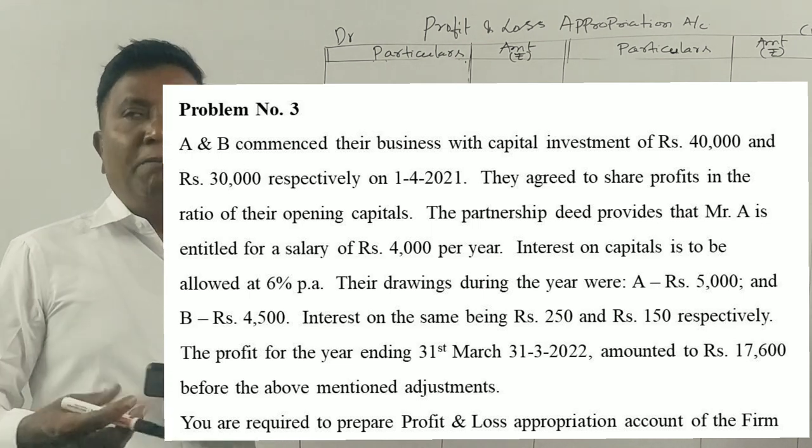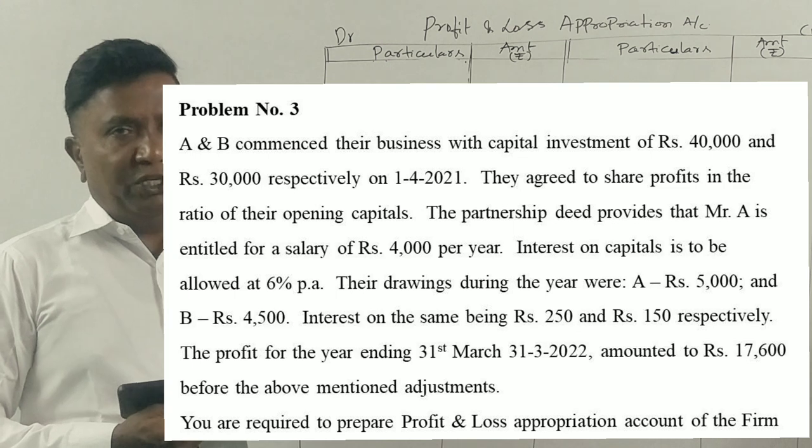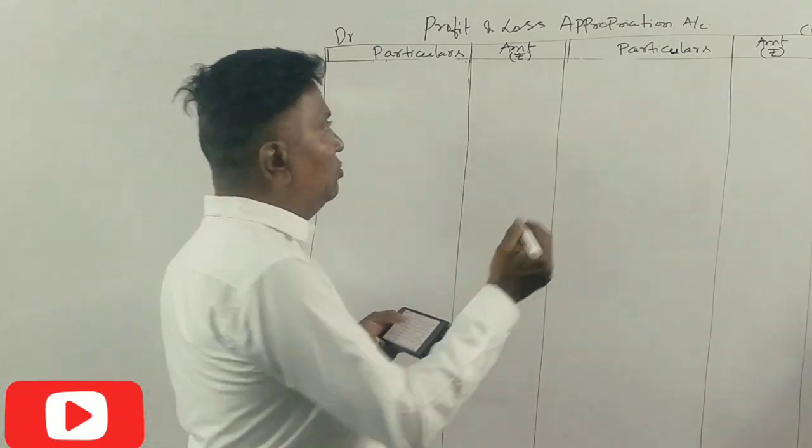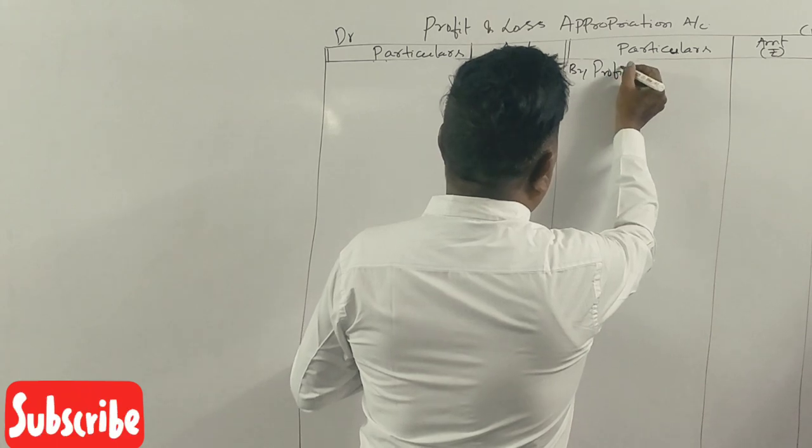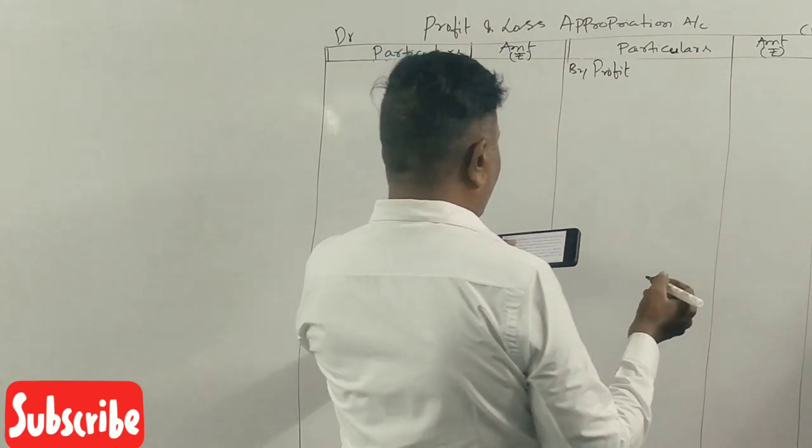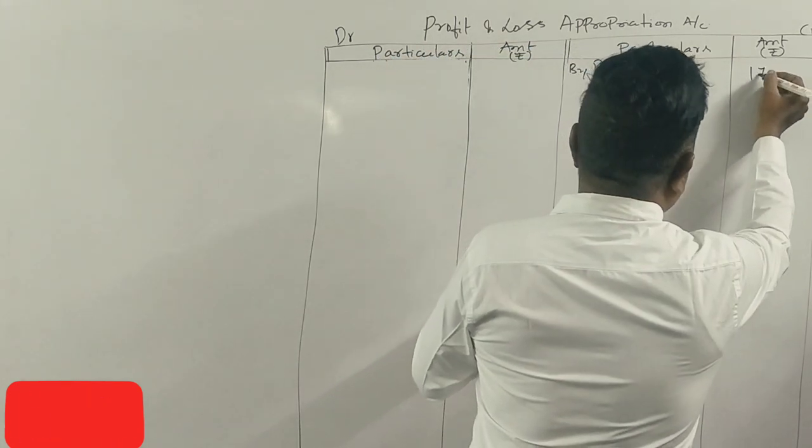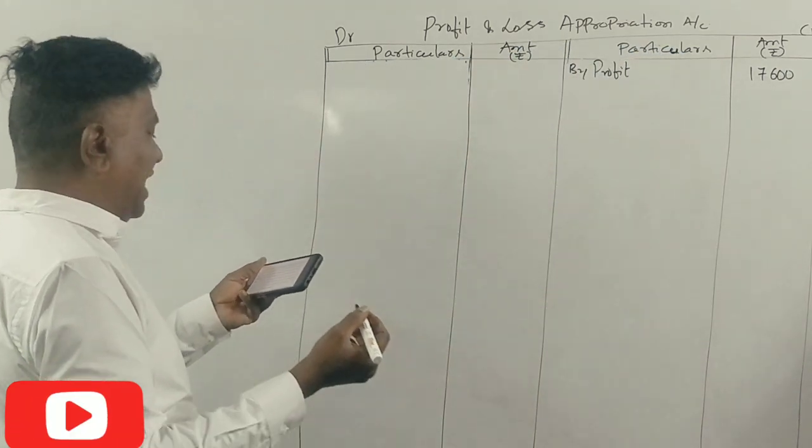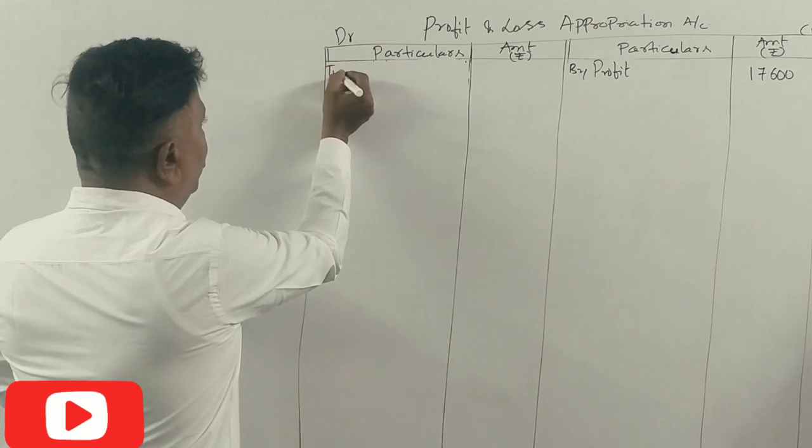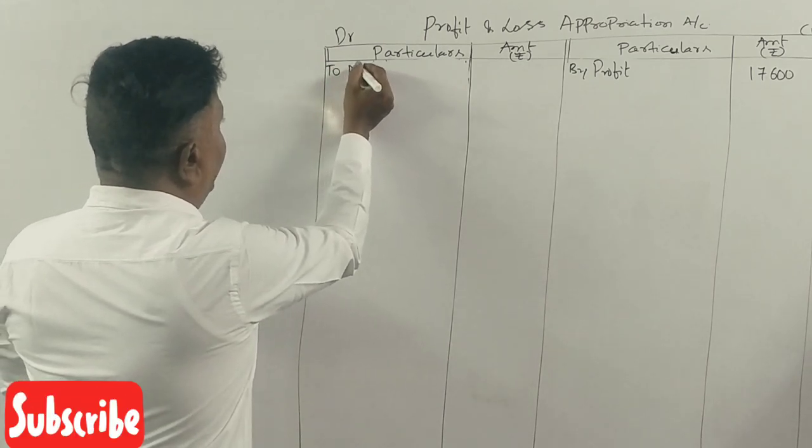Prepare profit and loss appropriation account. First of all, profit is provided before adjustment, so profit is Rs. 17,600. First of all, salary would be 4,000, so it is direct. Mr. A's salary.